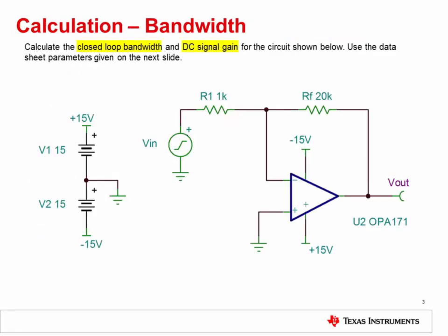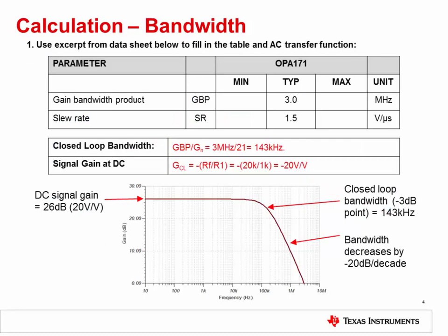First, calculate the closed-loop bandwidth and DC signal gain for the circuit shown here using the techniques and equations given in the bandwidth lecture. Use the datasheet parameters given on the next slide. This circuit uses the OPA171. In order to perform the calculations, you need to know the gain bandwidth product for that device. That value is given here. Enter your answers in the table in the middle of the slide. The solutions are already provided to allow you to check your work. Also, complete the AC transfer function for this circuit — the solution is already provided.